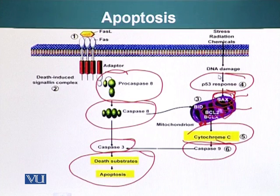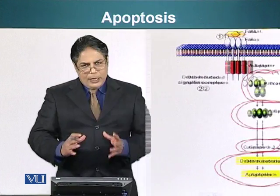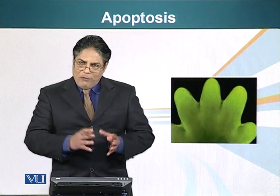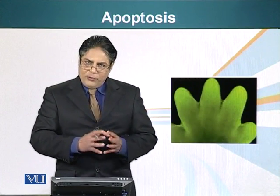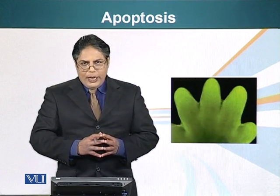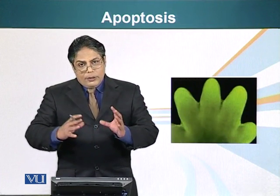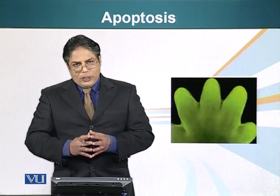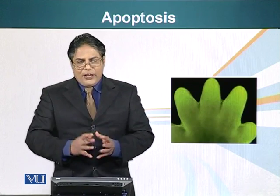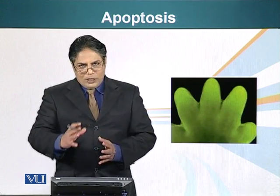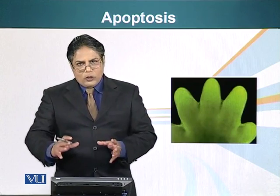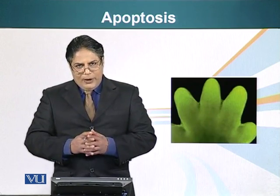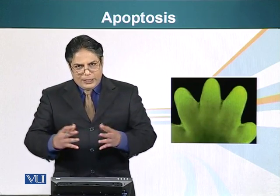We have talked about different ways cells can undergo apoptosis and the role of p53 protein. Apoptosis is a very important process, and dysregulation of this process can result in neoplastic transformation and cancer.